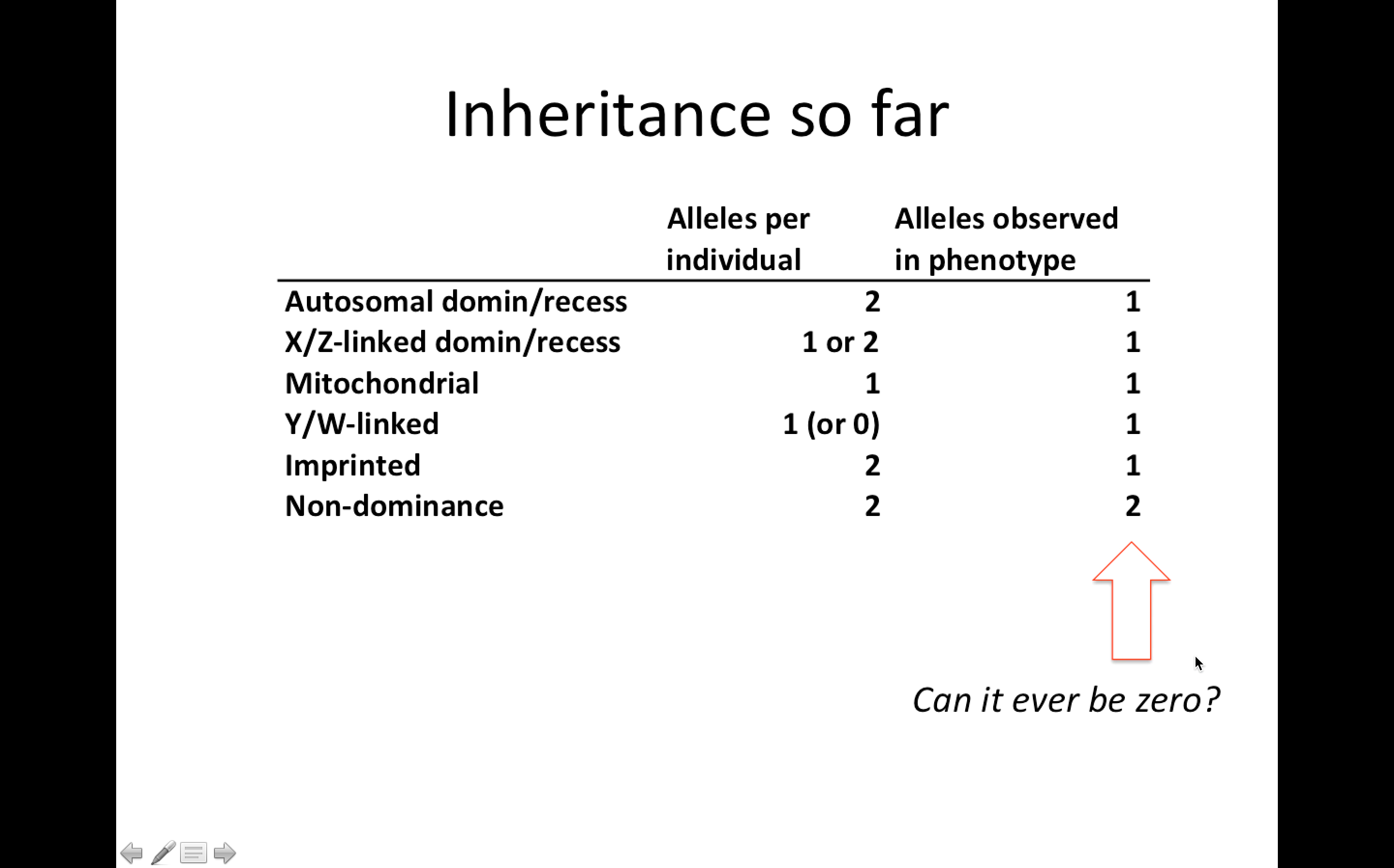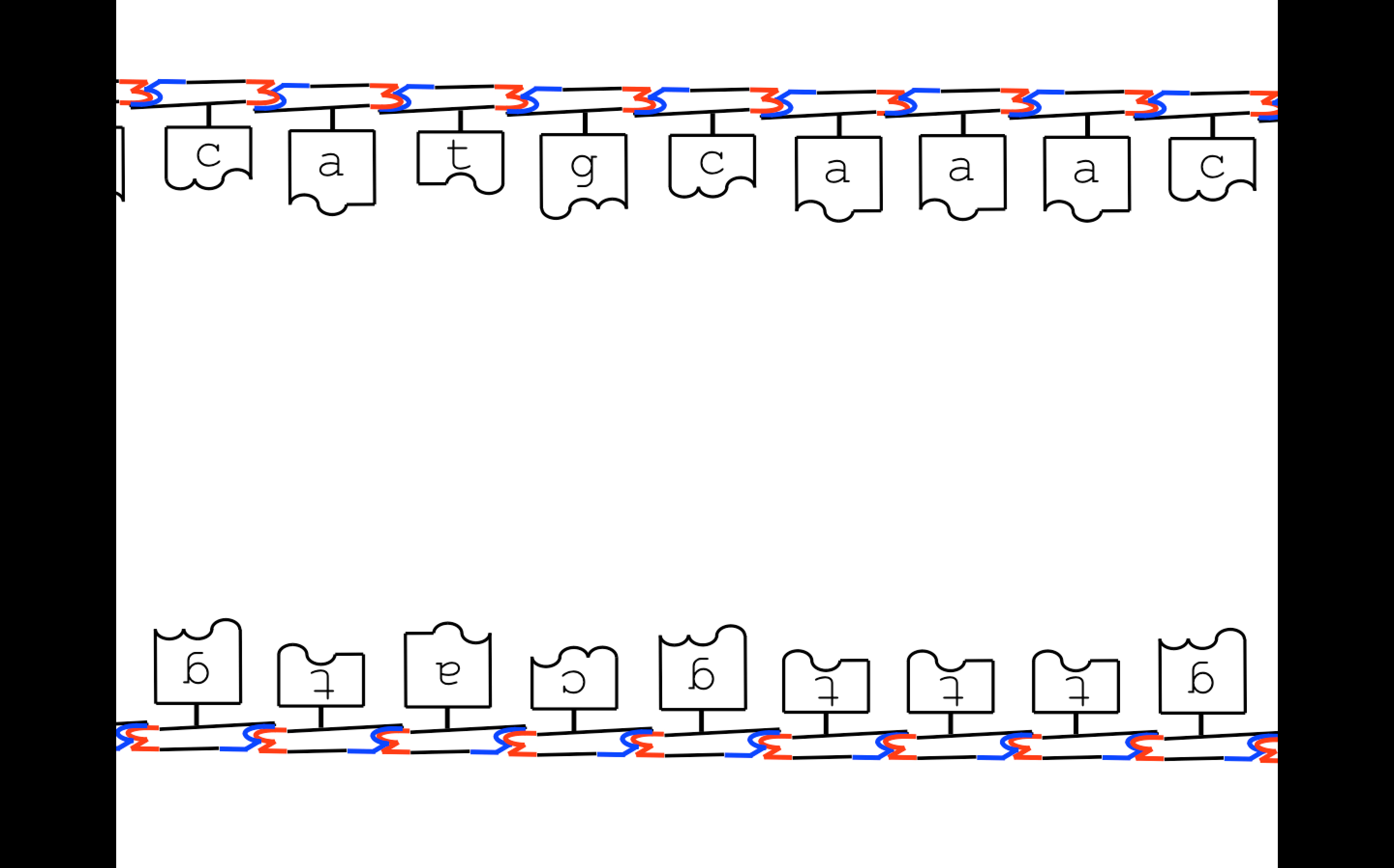So then we can ask the next question, can it ever be zero? Can we have zero alleles that are observed in our phenotype? That may not make quite sense what we're talking about. So let's step back and remind ourselves, what is a mutation? The simplest way to think about a mutation is just an error during replication. In fact, mutations can arise a number of ways, but this is the simplest way to think about it.